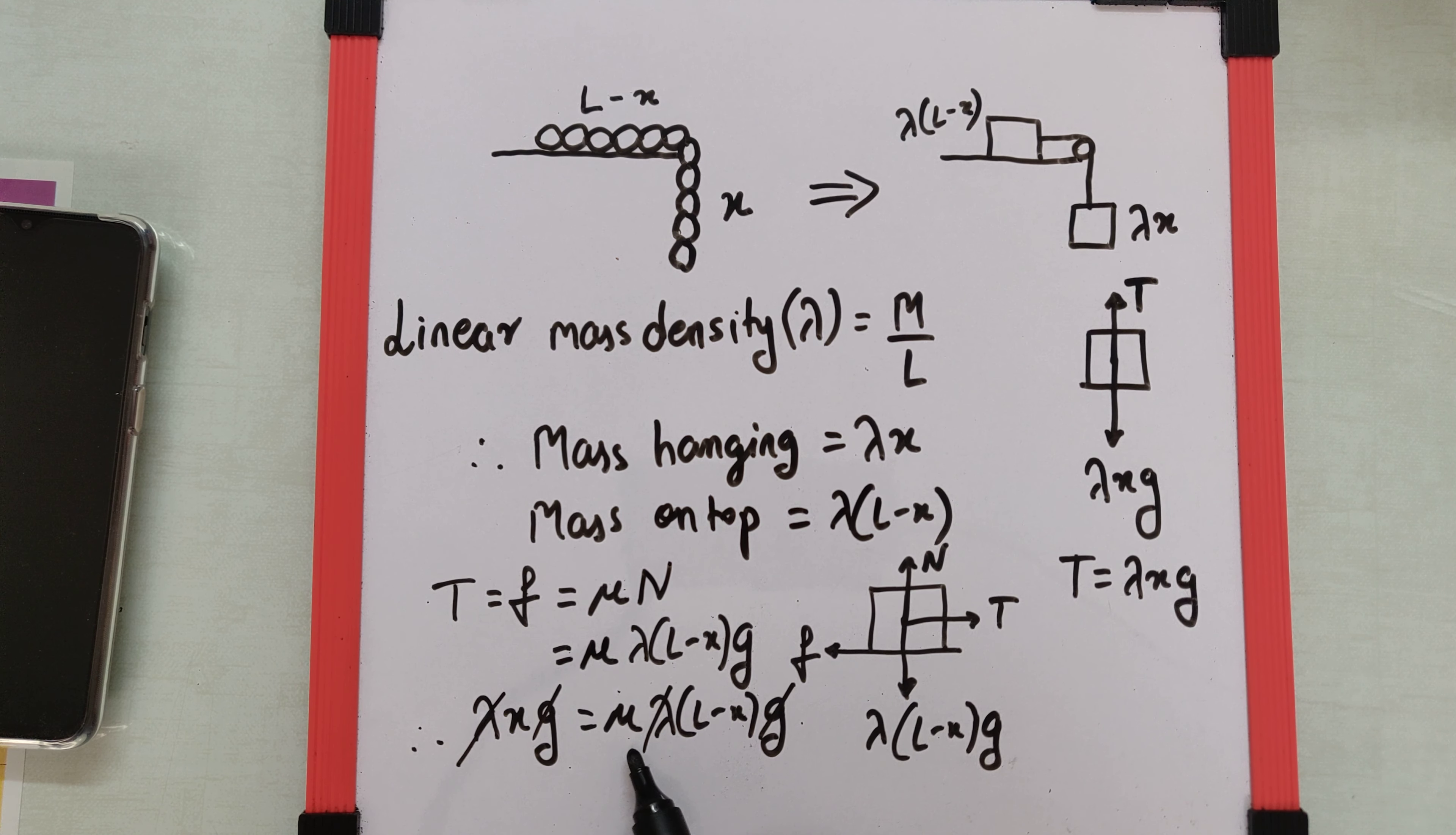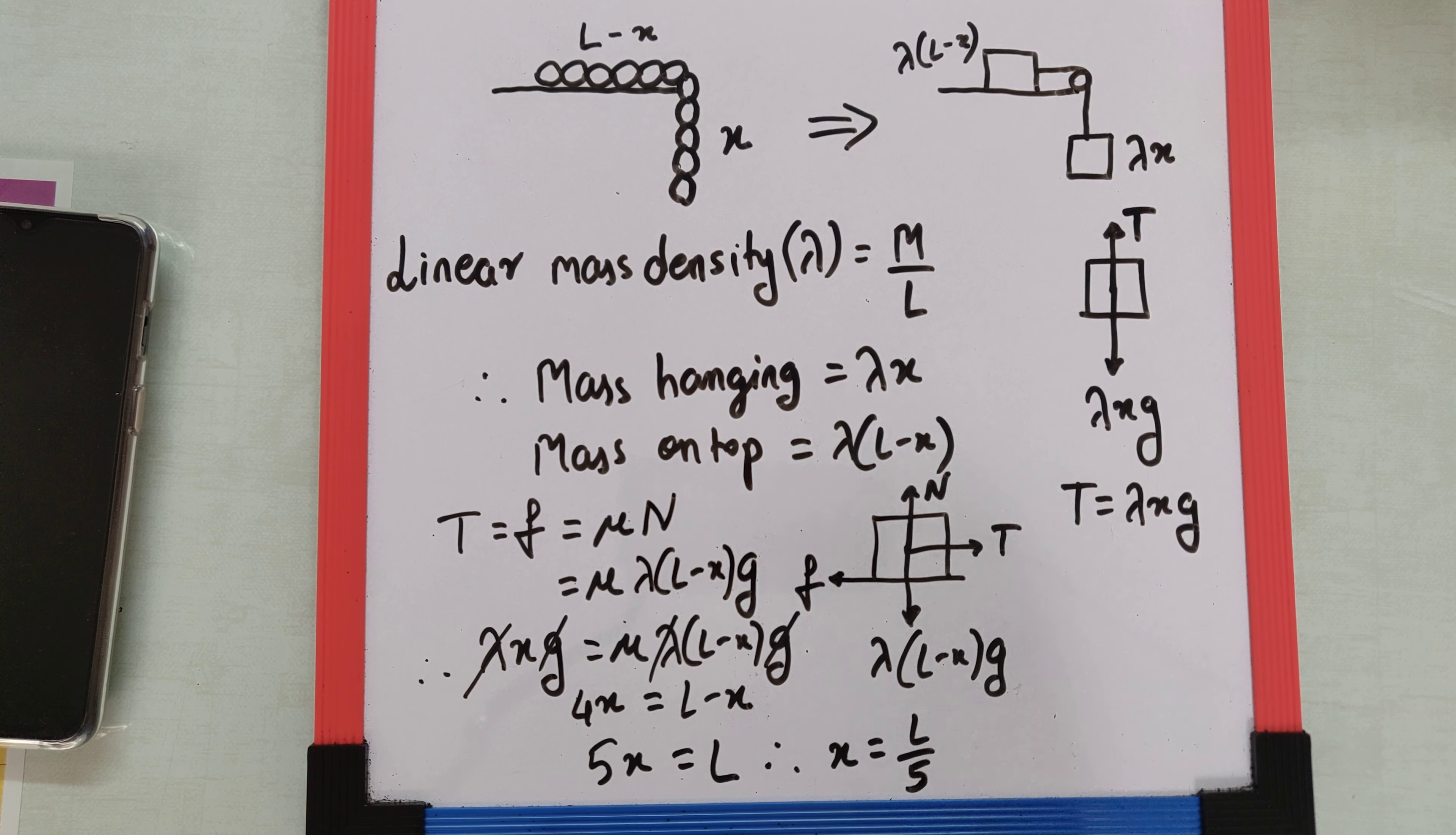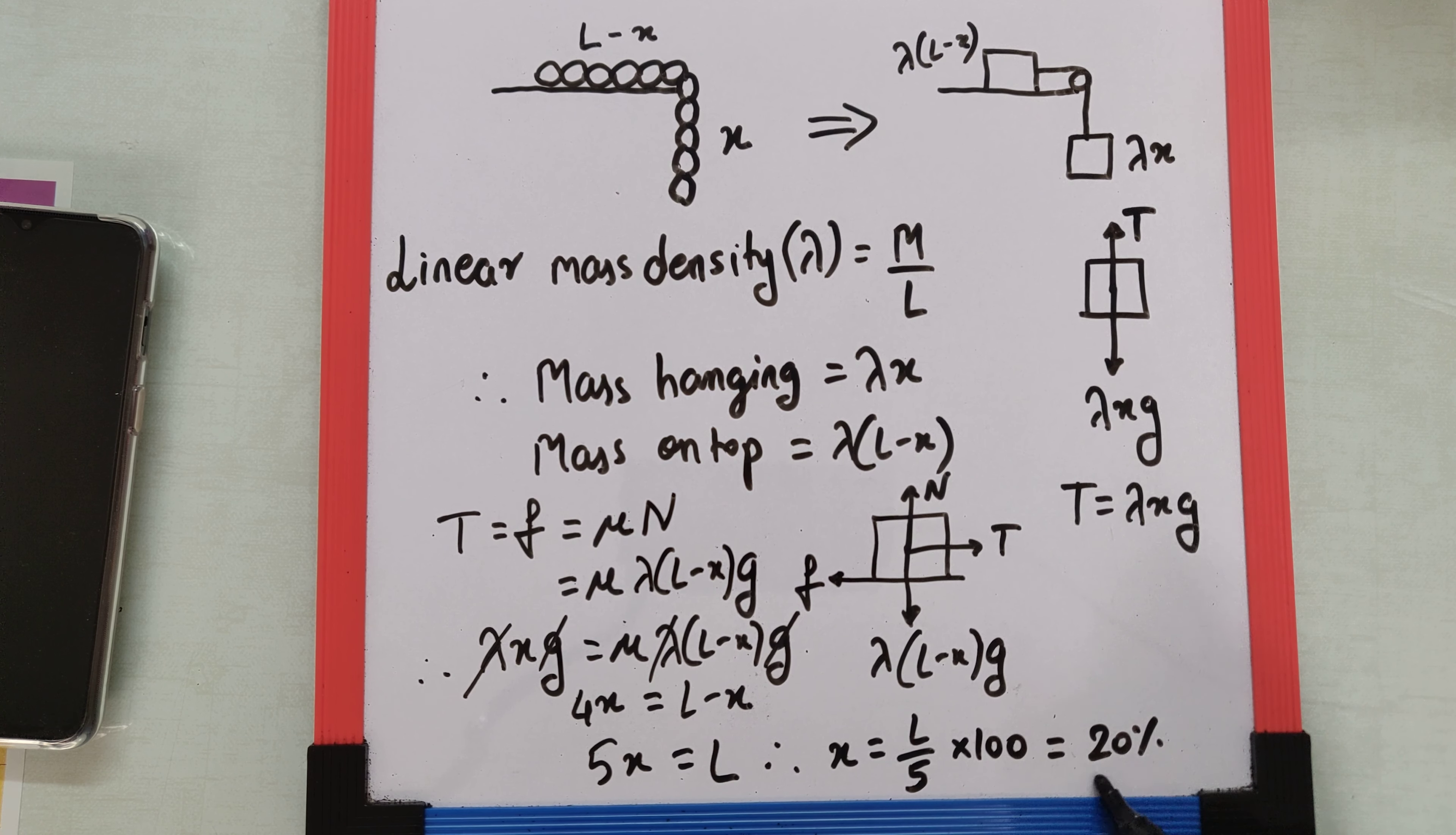The value of μ is 0.25, that's equivalent to 1 by 4, so 4 goes over here and becomes 4x equals L minus x. That gives you 5x equals L, and therefore I can say x is L by 5. Since we want the answer in percentage, I would multiply this by 100 which gives me 20 percent of L, and that becomes the final answer.